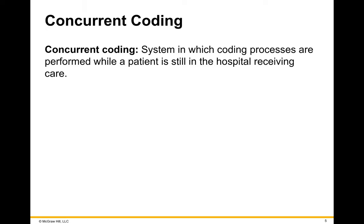Concurrent coding is a system where you're coding while the patient is still in house — they're still in the hospital and receiving care. This was something that was popular for a while, went out of fashion, and is now coming back a little bit. The idea is that if we can get these hospitalizations coded as soon as possible and accurately, it keeps our accounts receivable down and is financially beneficial to the hospital.